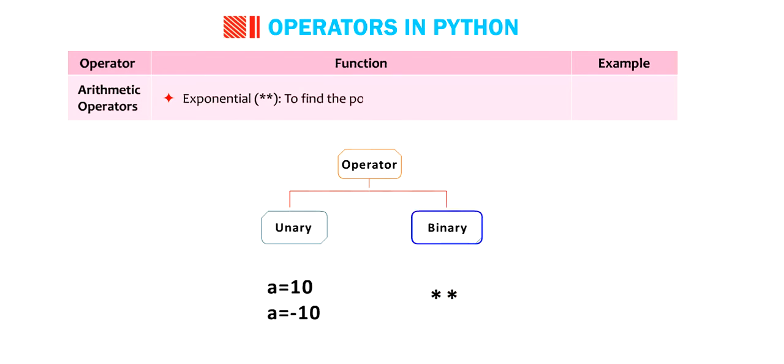Exponential. To find the powers of the numbers. 3 asterisk asterisk 4 equals to 81.